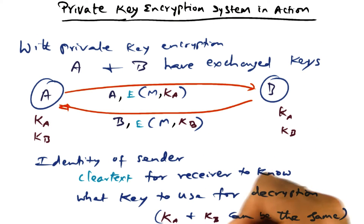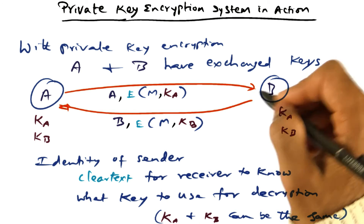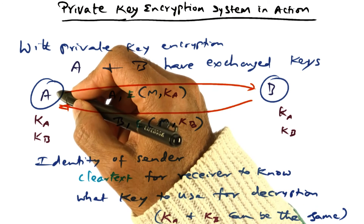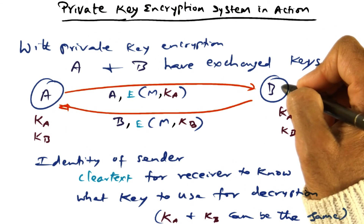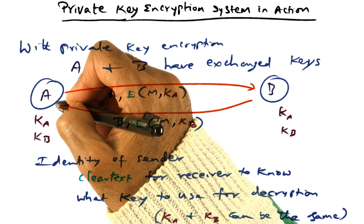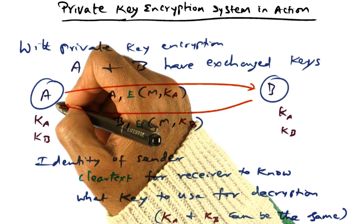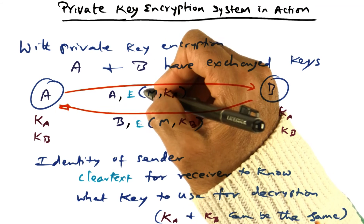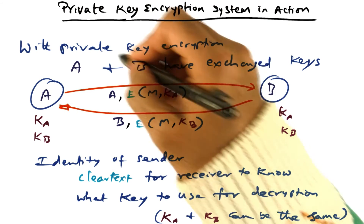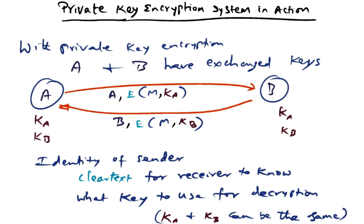Of course, KA and KB can be the same — in other words, it is the same key used for A to send a message to B as well as for B to send a message to A. The important thing to take away is that the key used for encryption and decryption of a given message is exactly the same. That's the idea behind the private key encryption system.